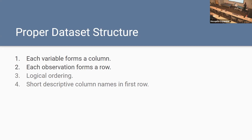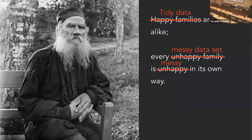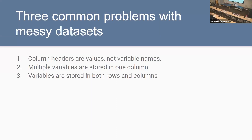So these are the characteristics of a tidy data set. What's the opposite of tidy? A messy data set. Wickham had a good retooling of a popular Tolstoy quote: like happy families, tidy data sets are all alike — every messy data set is messy in its own way. That's what makes data cleaning so much work. I'll go over a few quick examples: three common problems with messy data sets.